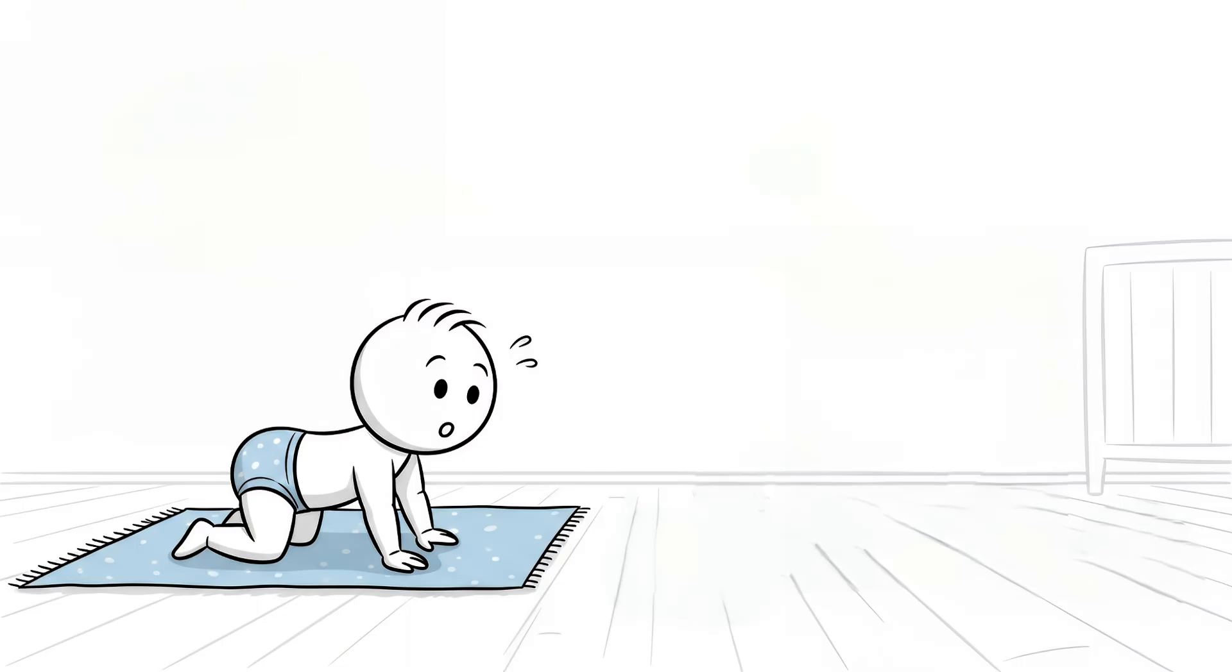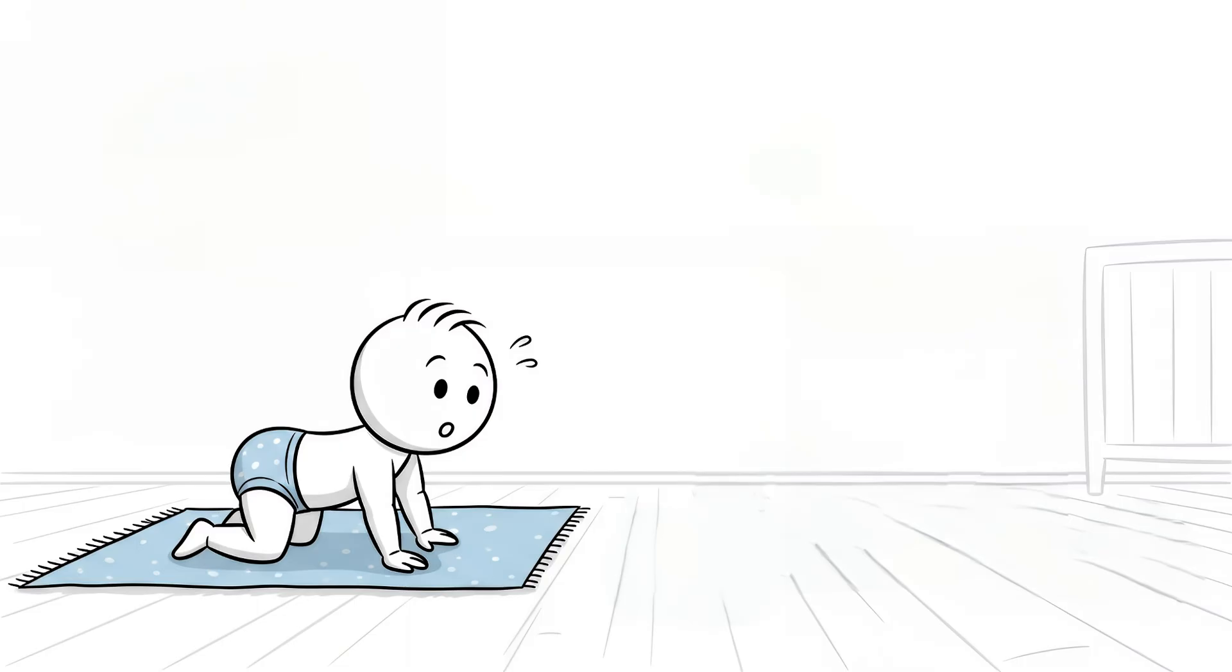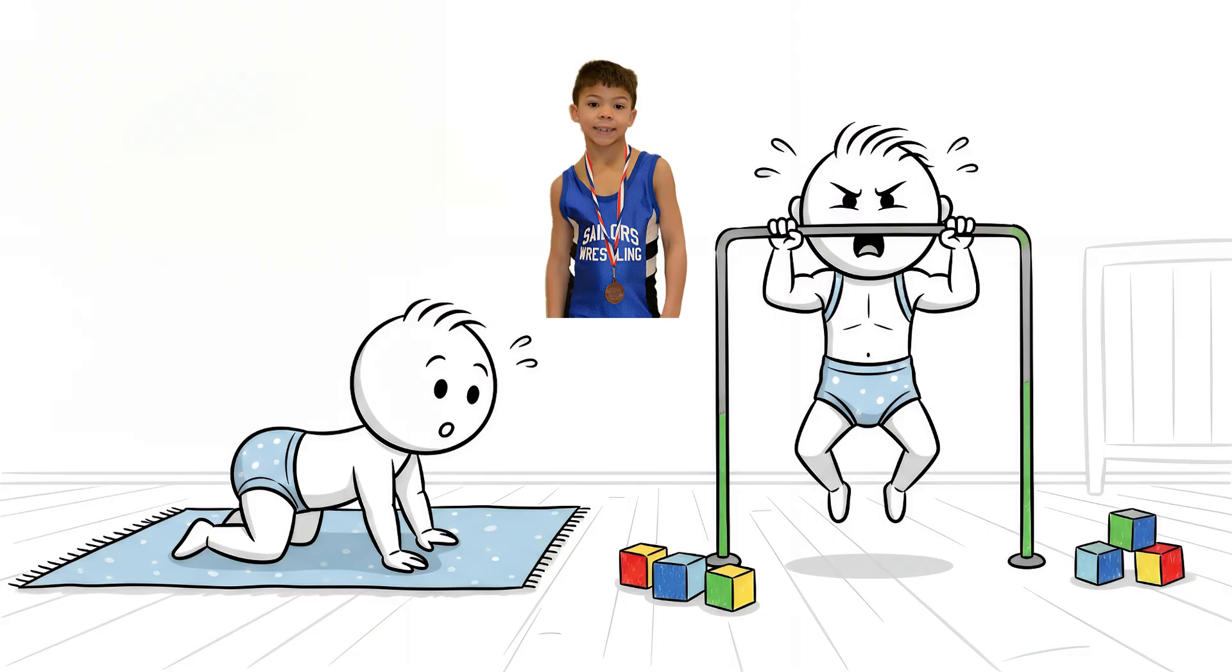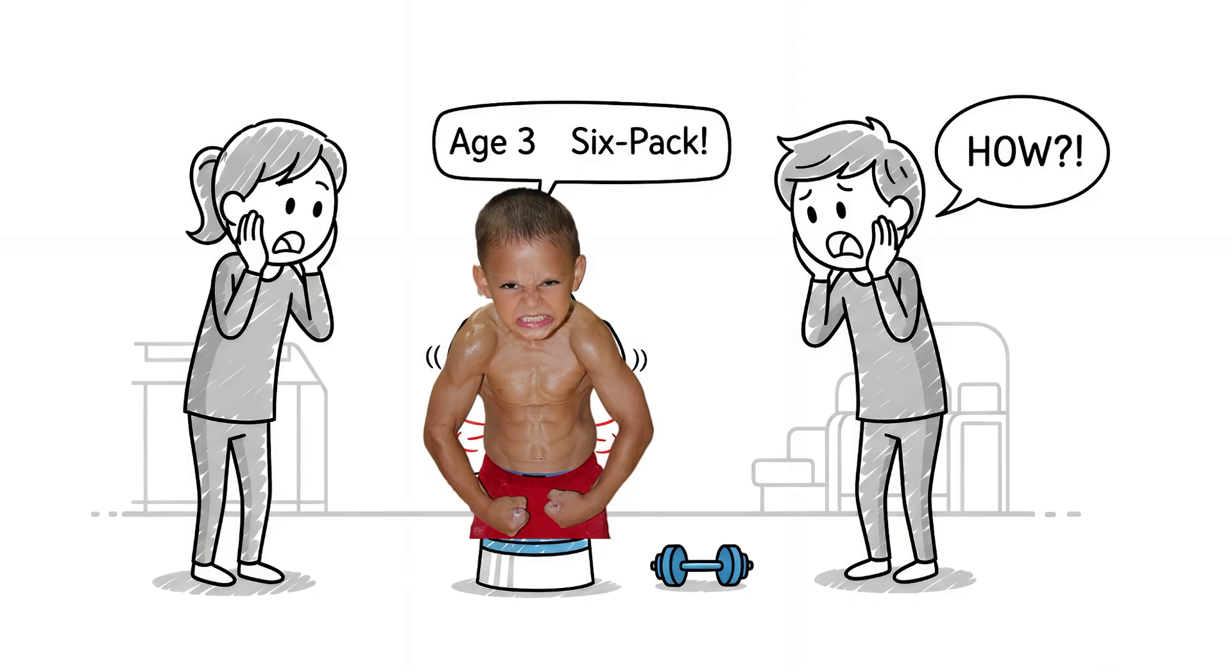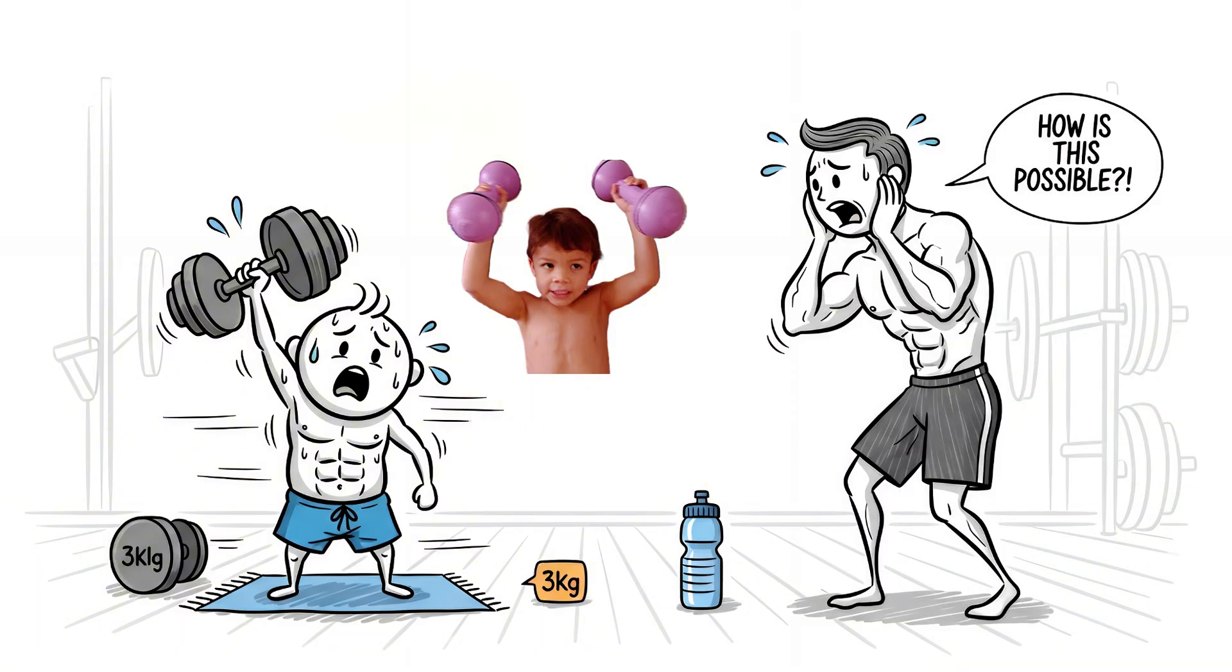Number 8. The Toddler Hulk. At 9 months old, most babies are learning to crawl. Liam Hoekstra was doing perfect pull-ups. By age 3, he had a 6-pack and could hold a 3-kilogram dumbbell at full extension for minutes. That's adult bodybuilder territory.